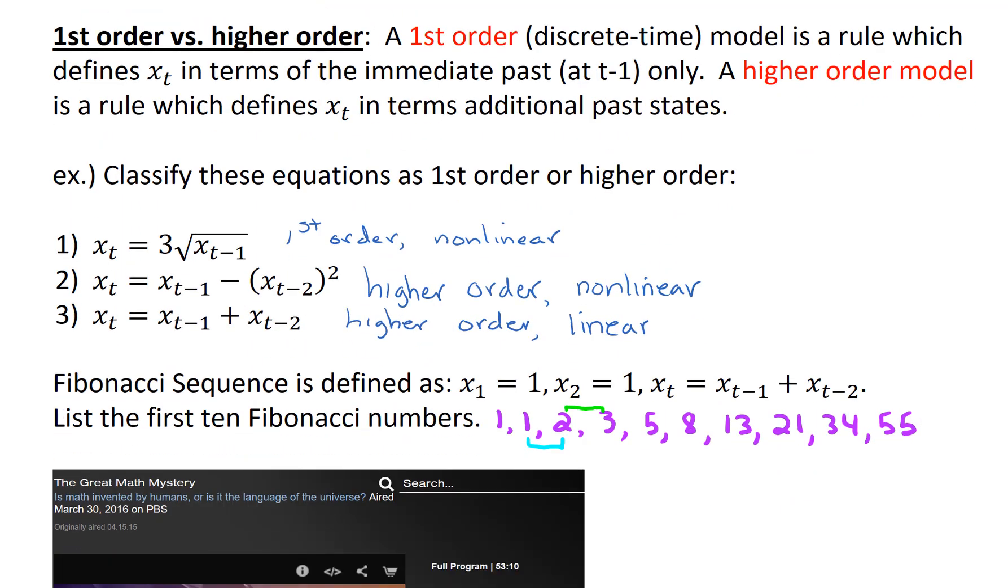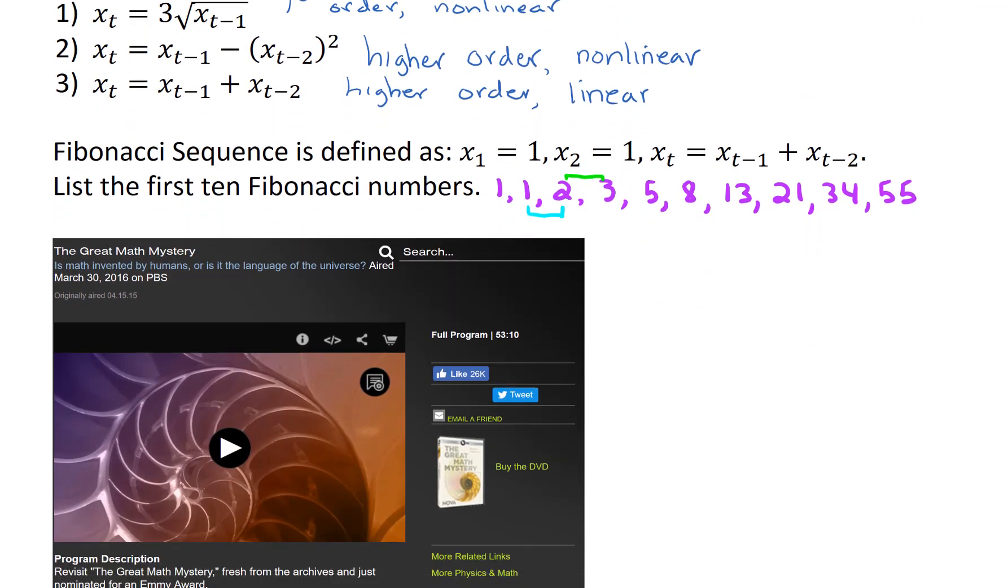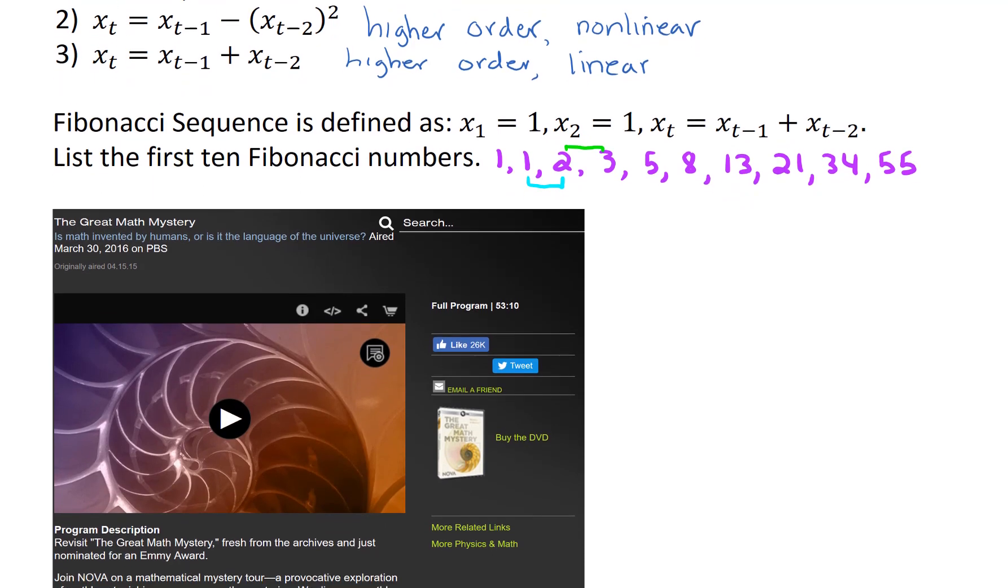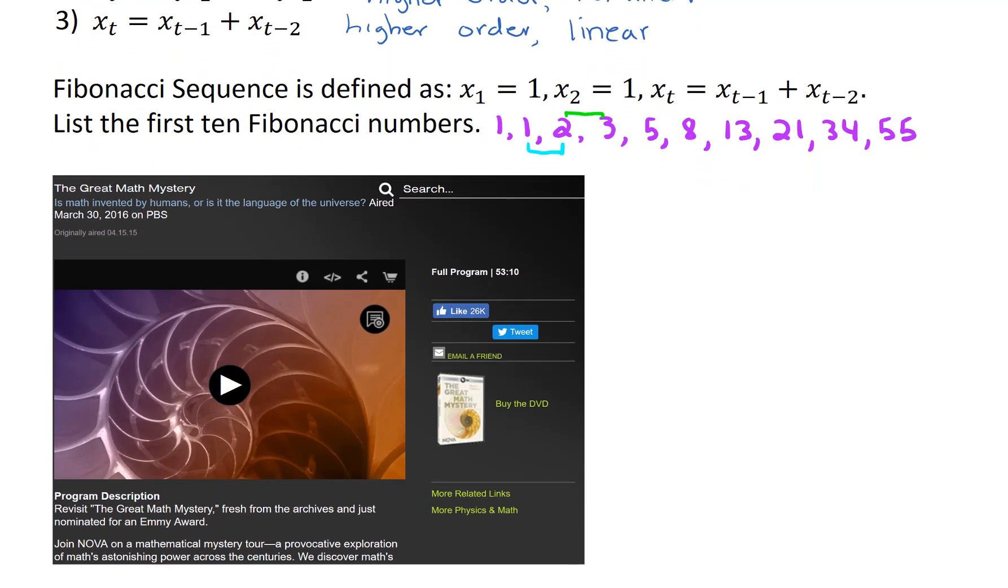There's an excellent video called The Great Math Mystery, and in this video, they talk about math and nature. They talk about where Fibonacci numbers actually occur in nature, and this nautilus shell that's on the cover of this video is one such example. So really fascinating applications of a recurrence relation and modeling nature. This is a highly recommended video.